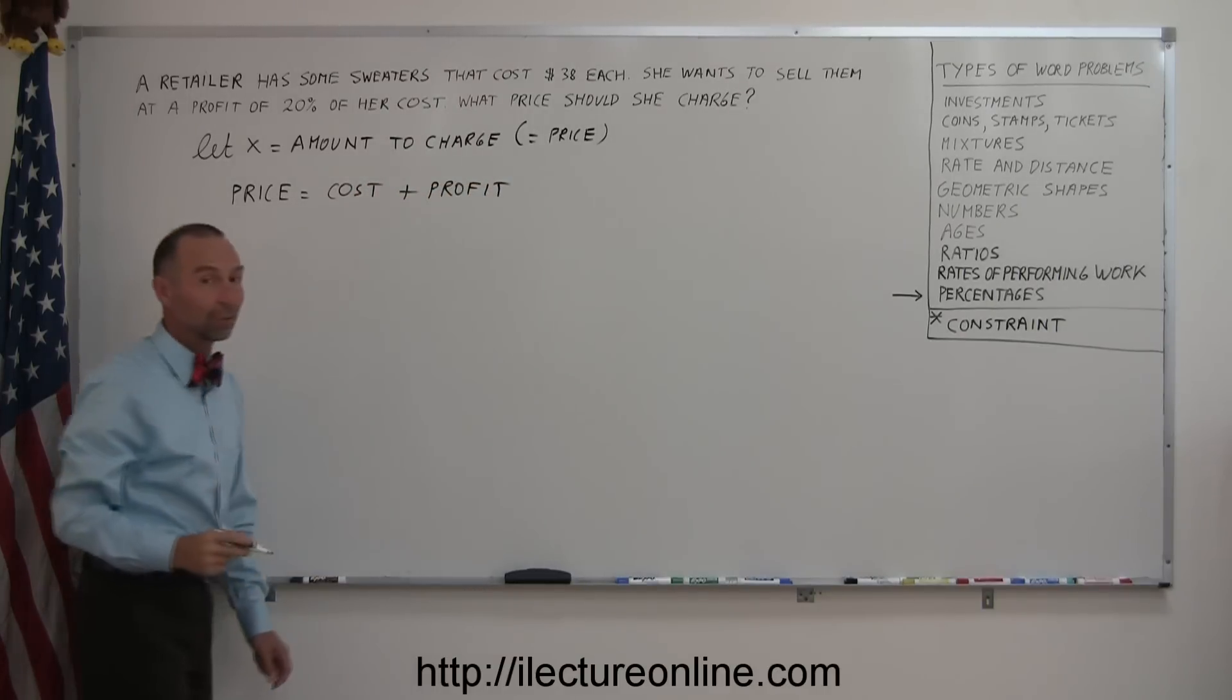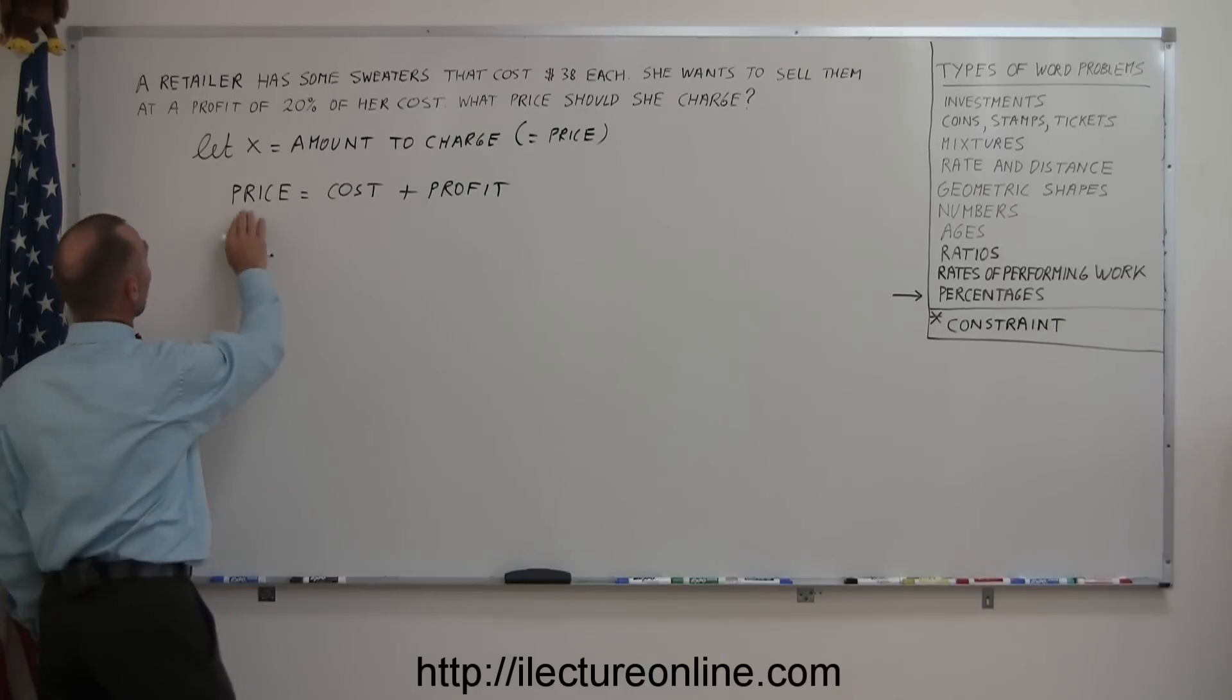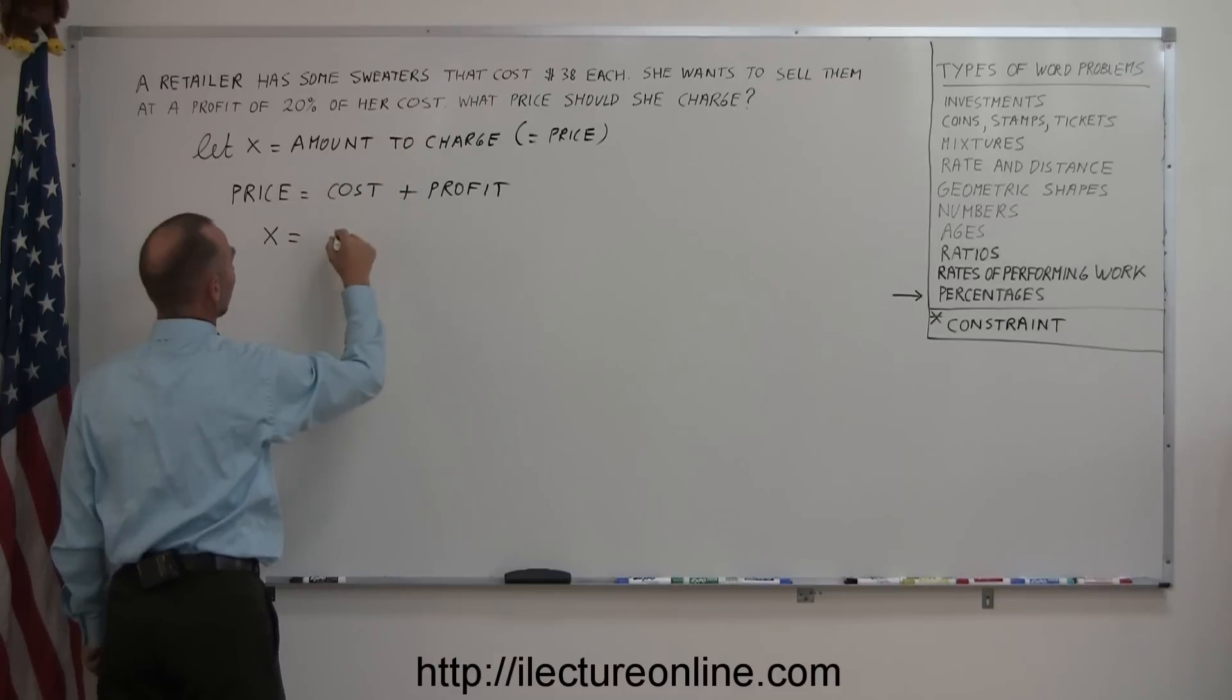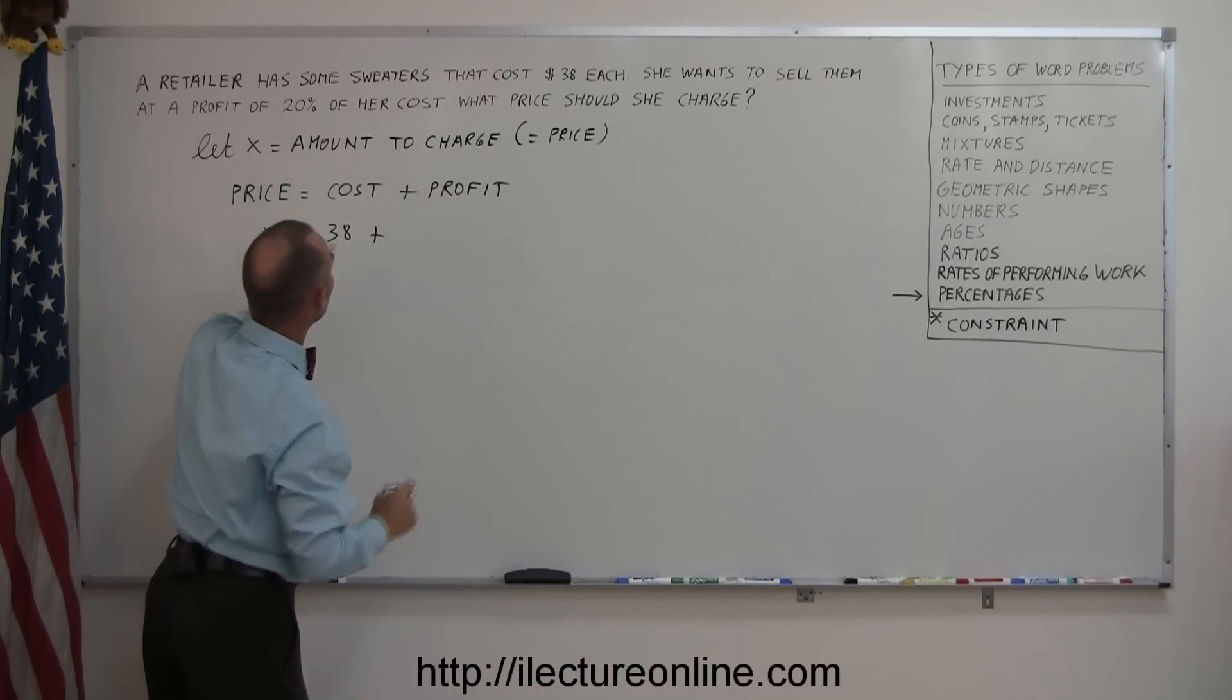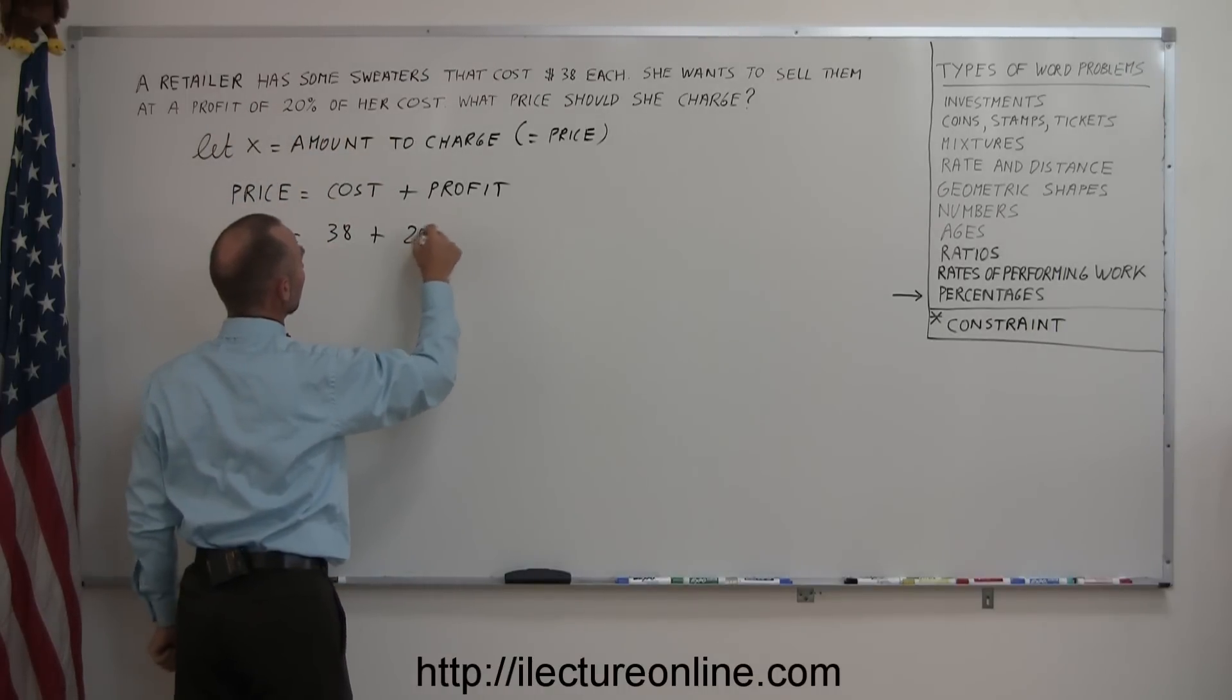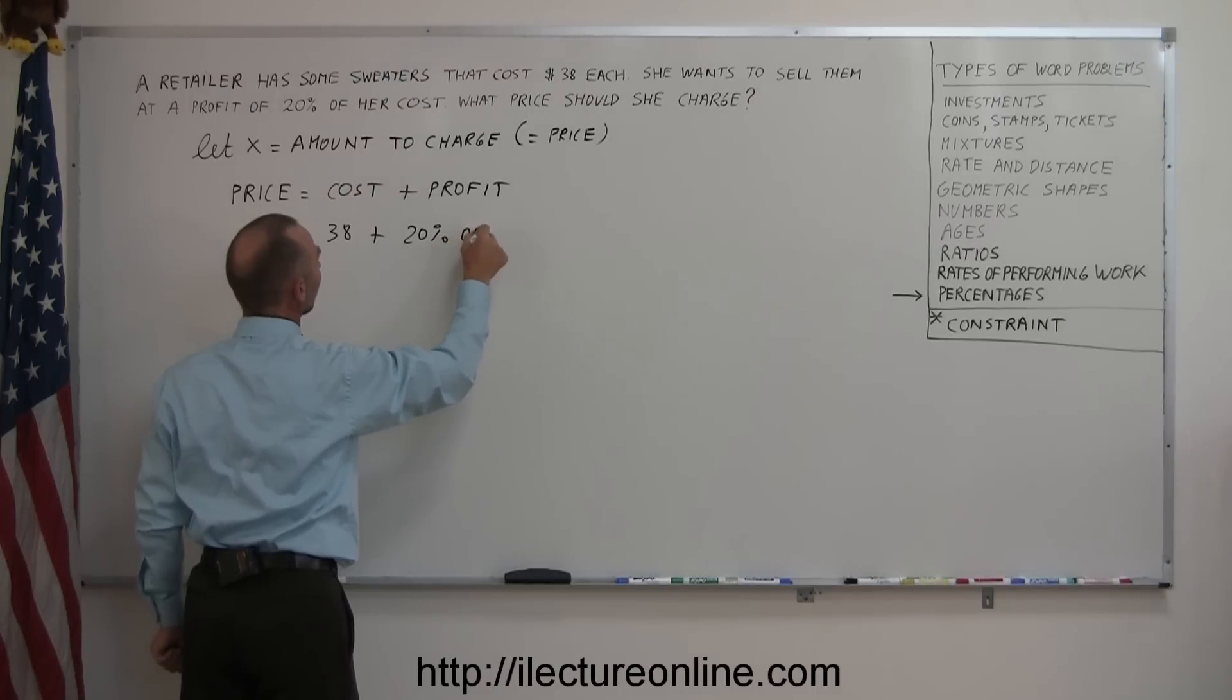And now we just have to write in each one of those what they are. So the price is what we're looking for. We call that X. The cost is the original cost we started with, $38. And the profit was defined by 20% of the cost.